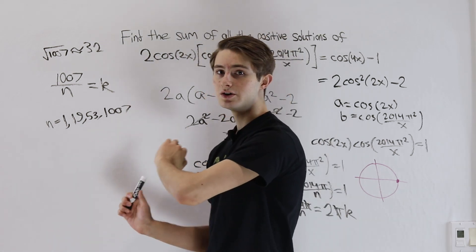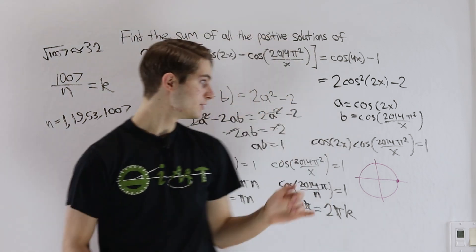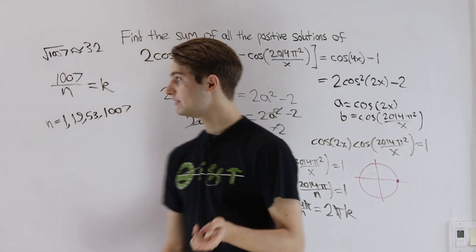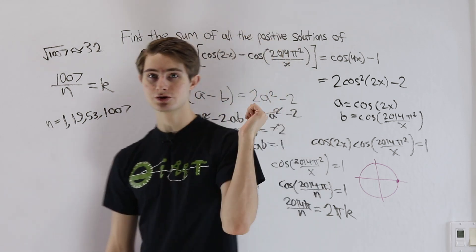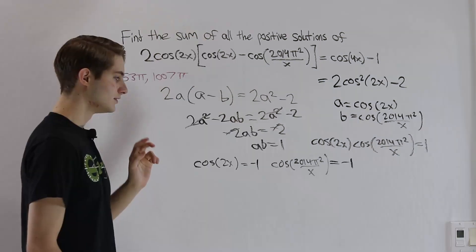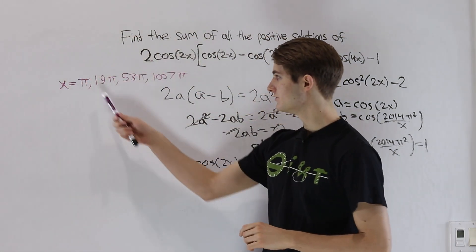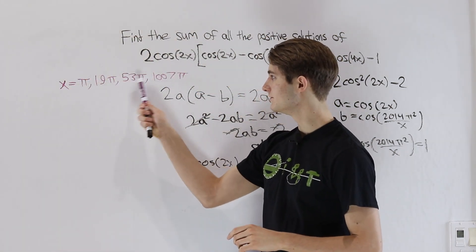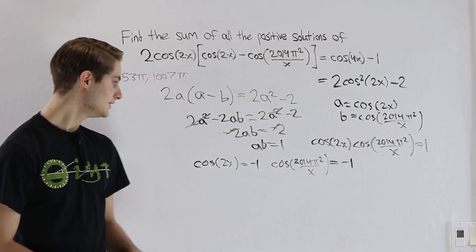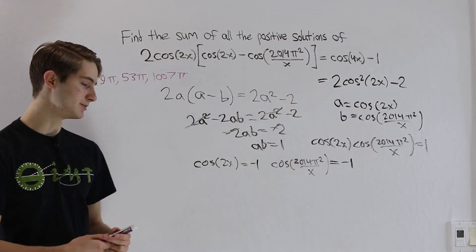So now we can take these solutions, store them for later, and check the negative 1 case. We have the solutions that we found earlier, which are 1, 19, 53, and 1007 all multiplied by π, and now we need to look at the case where both of these are equal to negative 1.